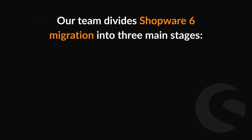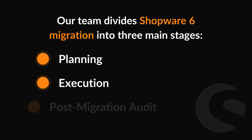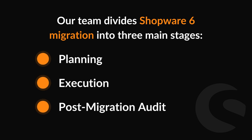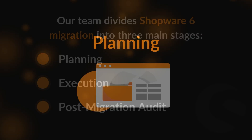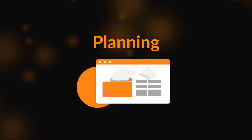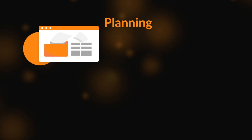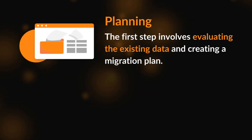Our team divides Shopware 6 Migration into three main stages: Planning, Execution, and Post-Migration Audit. The first step, Planning, involves evaluating the existing data and creating a migration plan.